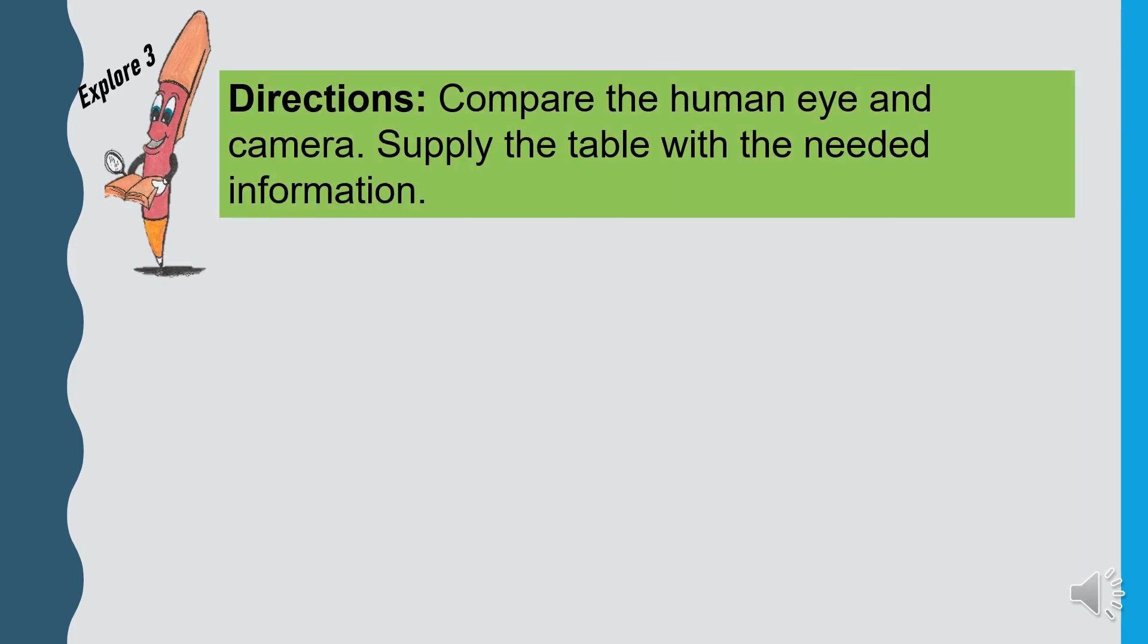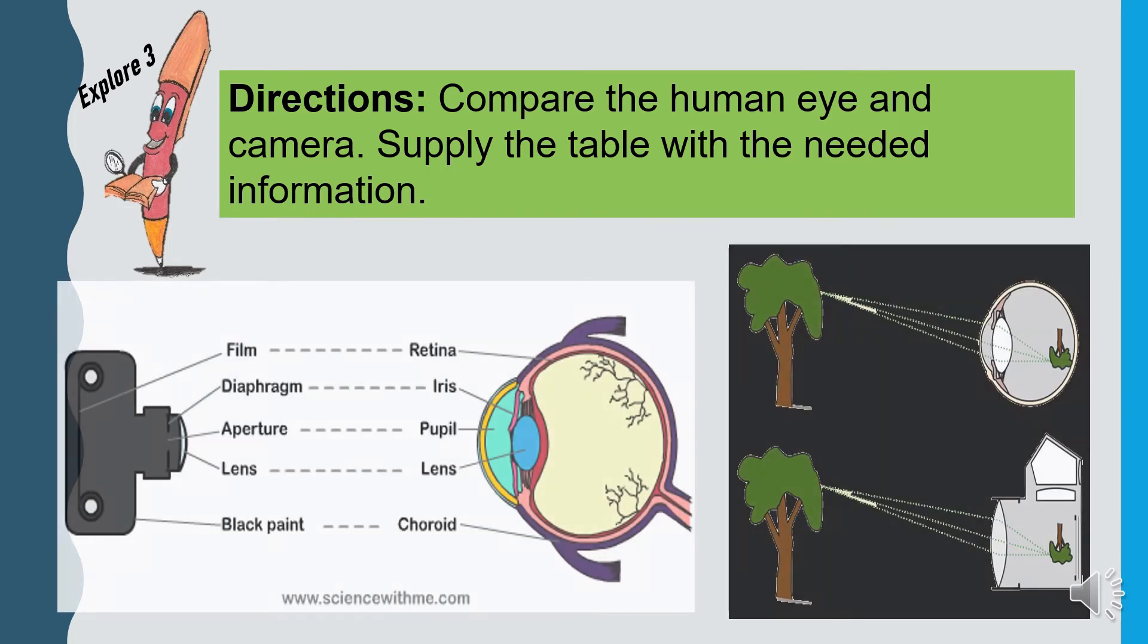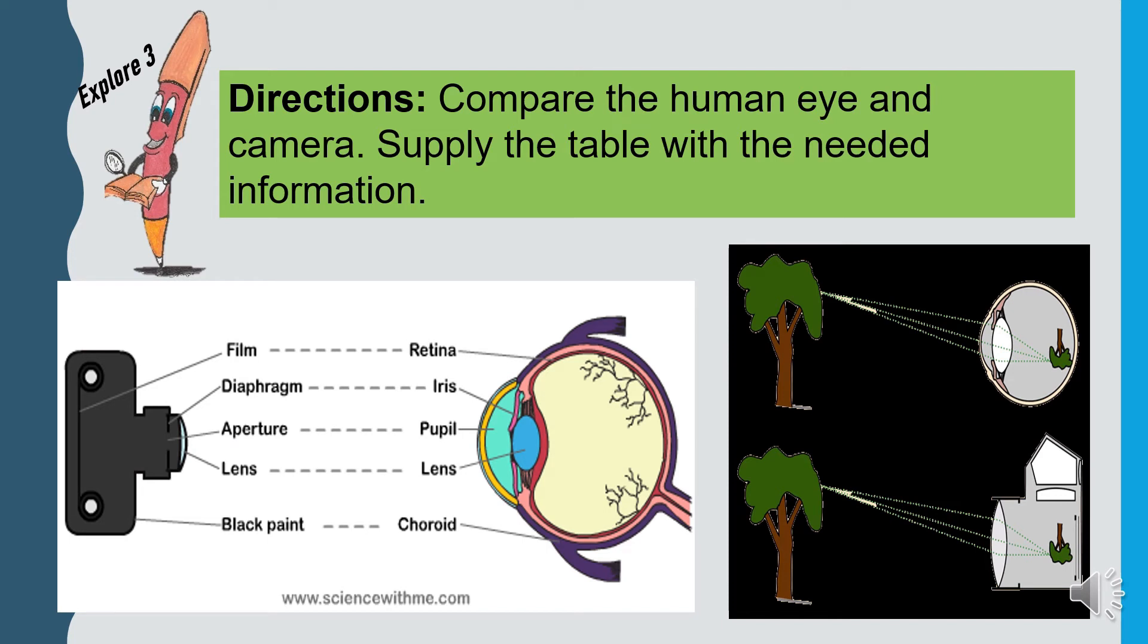Explore number 3. Compare the human eye and camera. Supply the table with the needed information. Don't forget to write your answers in your activity notebook. You can pause this video for a while in accomplishing this task.